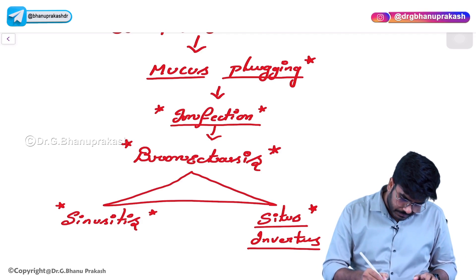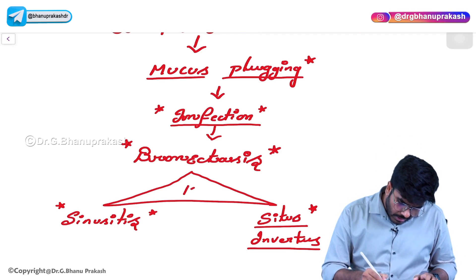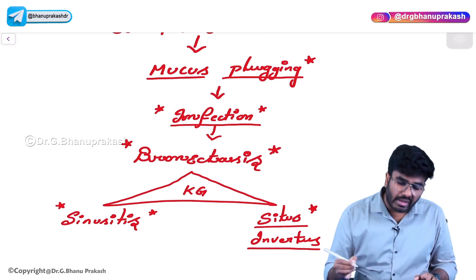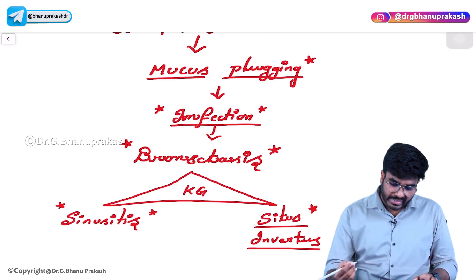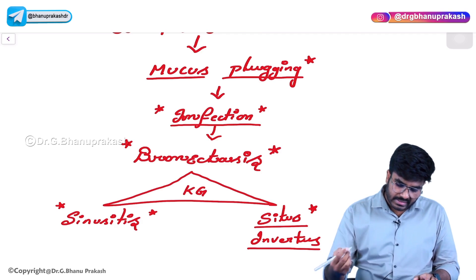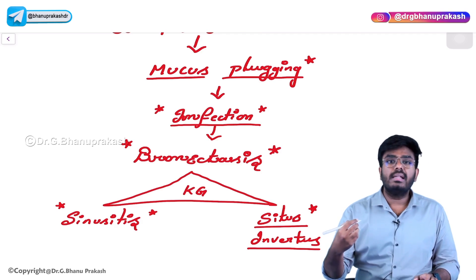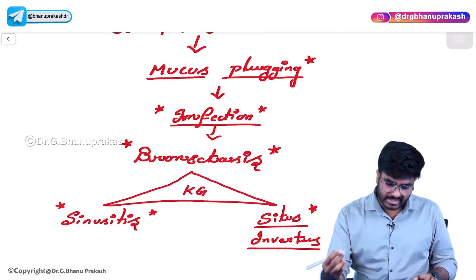So, this is the triad. Kartagener's syndrome patients are going to have a triad of symptoms which includes bronchiectasis, situs inversus, and sinusitis.